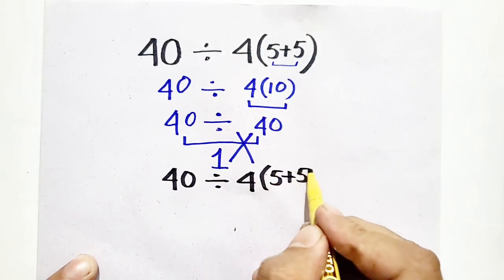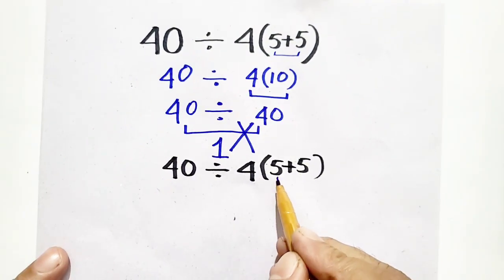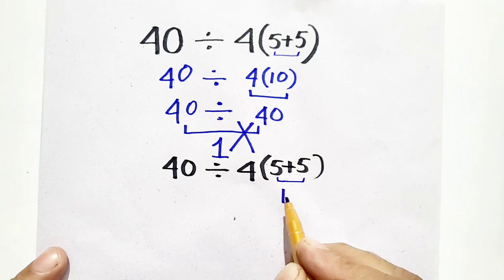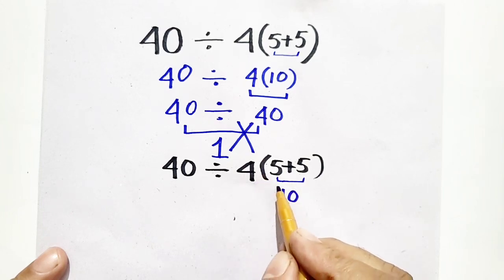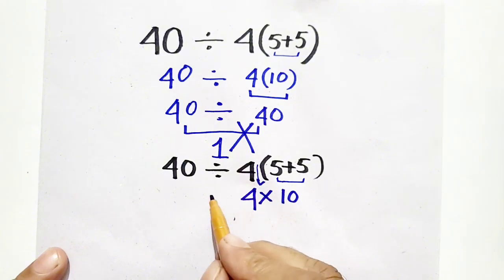The first step is to solve parentheses, which will be equal to 10. Here is no sign, so multiplication is there, 4 as it is.